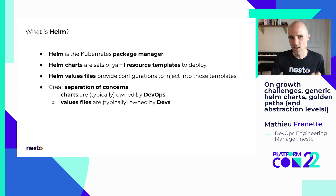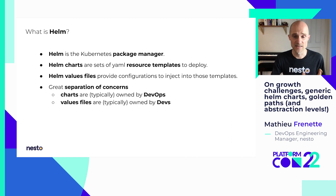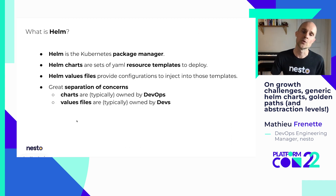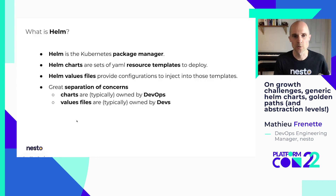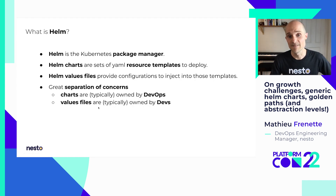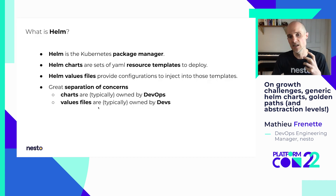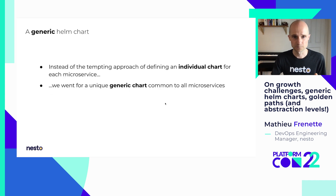Typically, charts are owned by DevOps because this is the boilerplate that's repeated across multiple microservices. And values files are just the configs that developers care about. So that's exactly what we wanted.